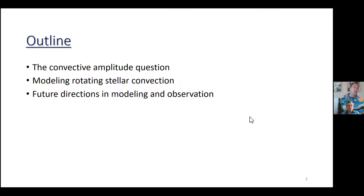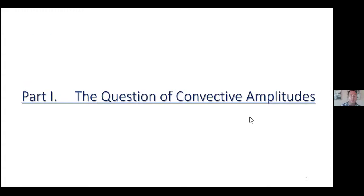Here's a brief outline. I'll talk first about convective amplitudes in the sun — really, how fast is the characteristic speed of deep solar convection, and what is the spatial scale? Then I'll talk about how we actually model rotating stellar convection, and then some future directions after discussing results from the past few years.